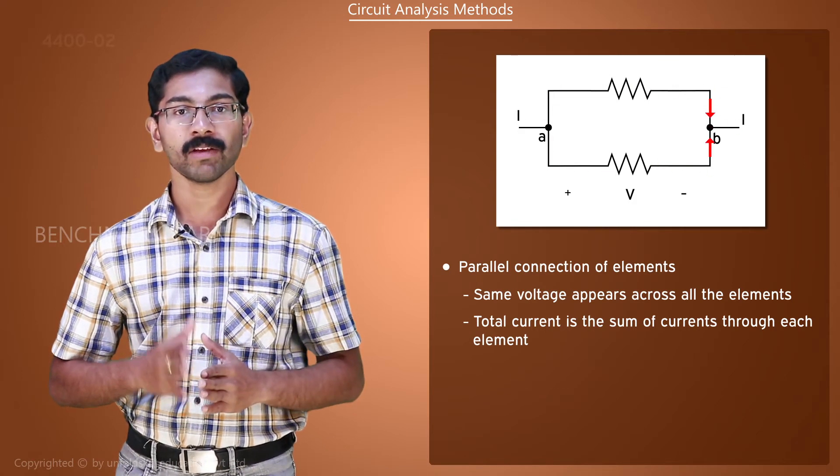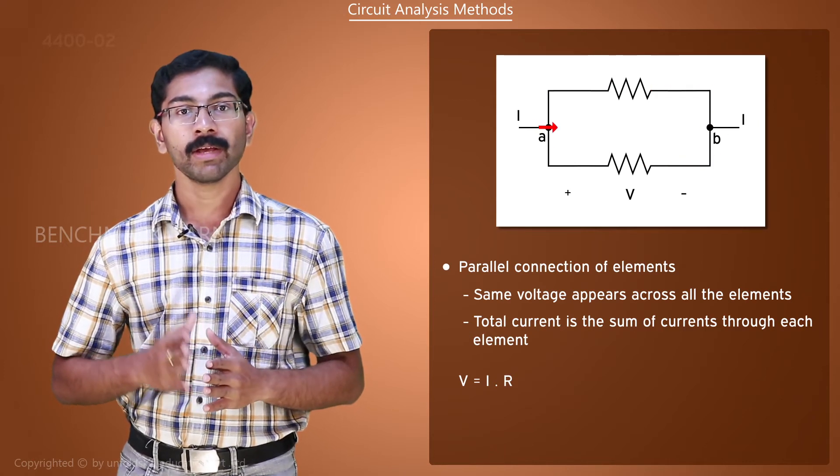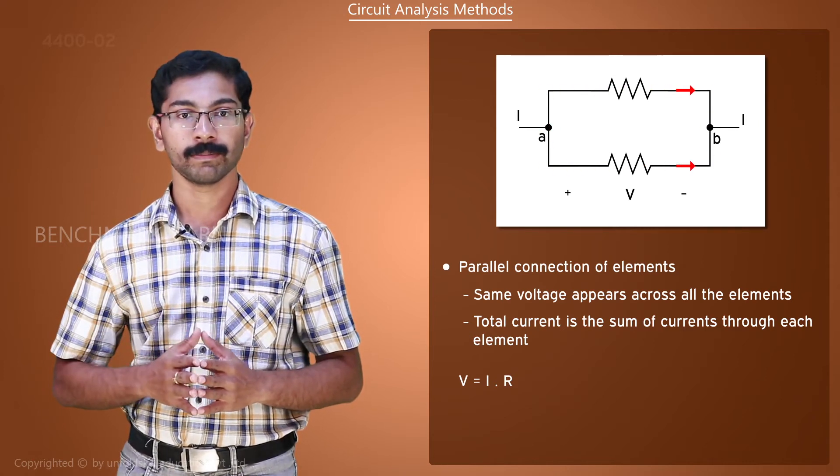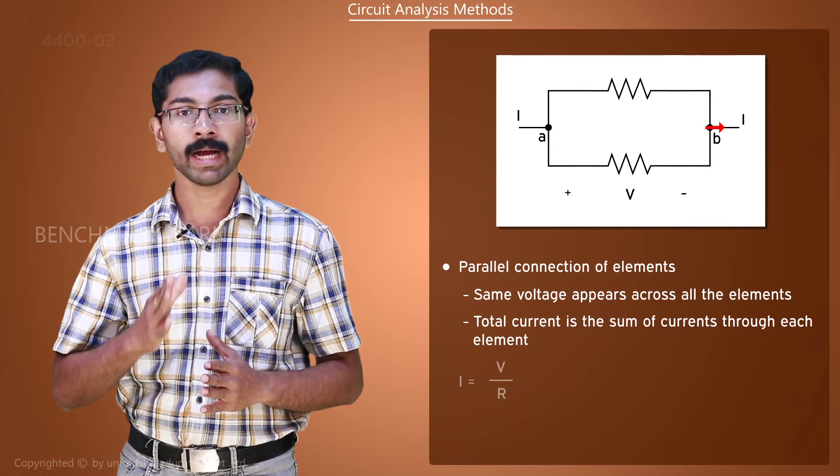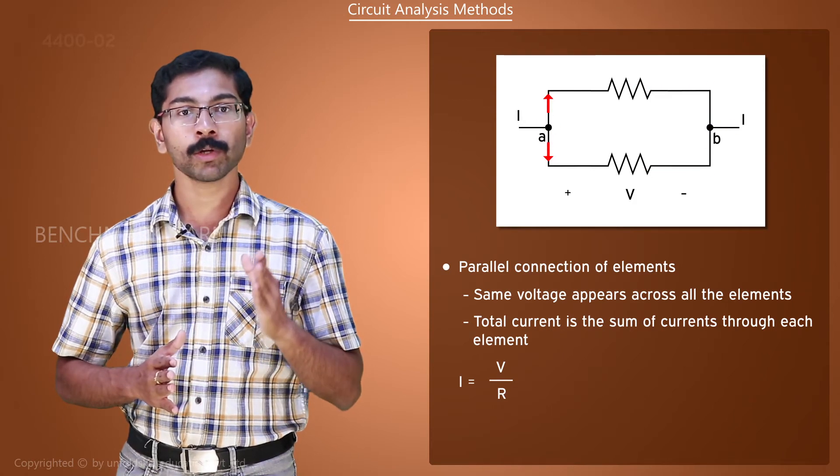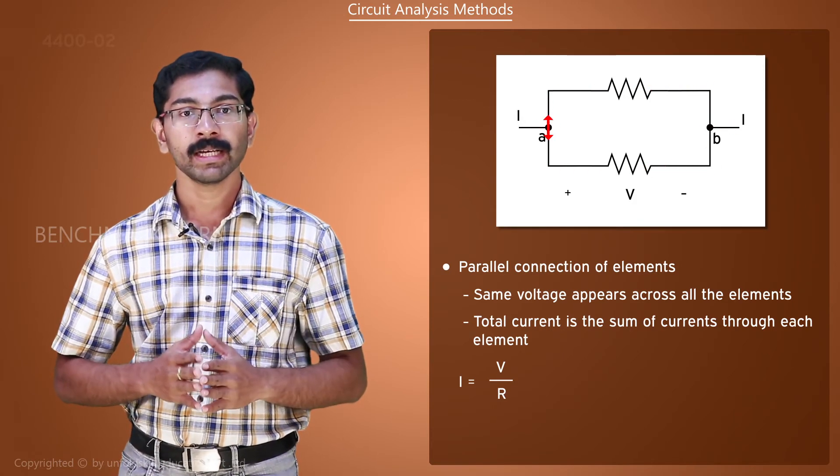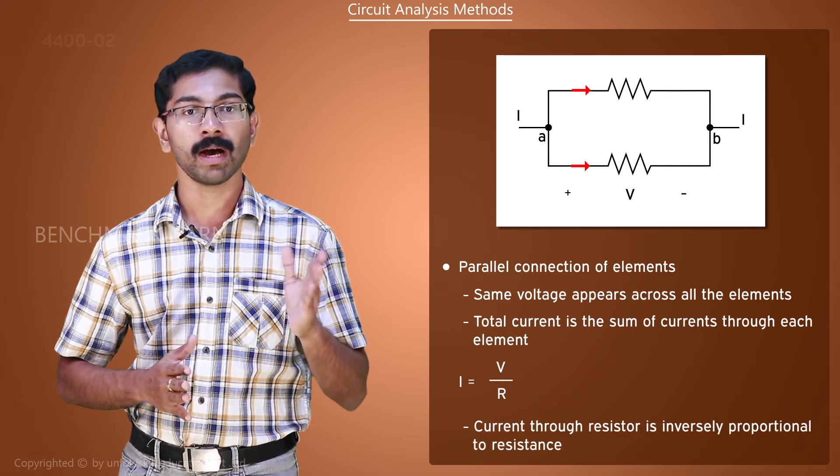Ohm's law states that V equals I times R. In parallel connection, we have to find the currents, so we rearrange this equation such that I equals V divided by R. As voltage across each element is the same, we can say that the current I is inversely proportional to the resistance R.